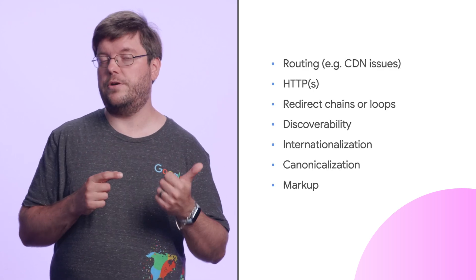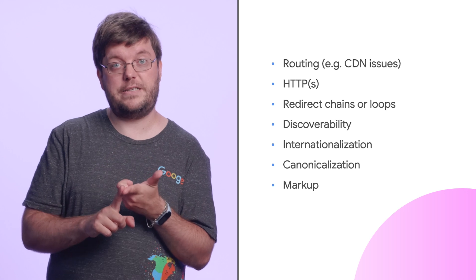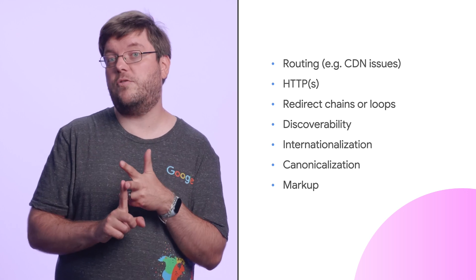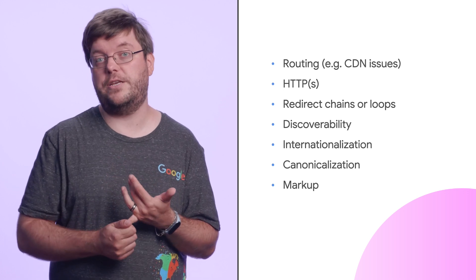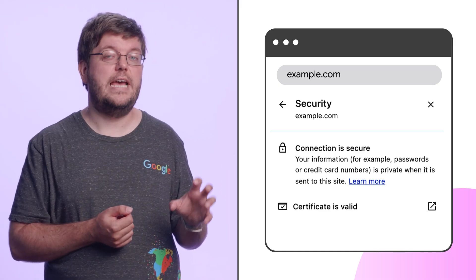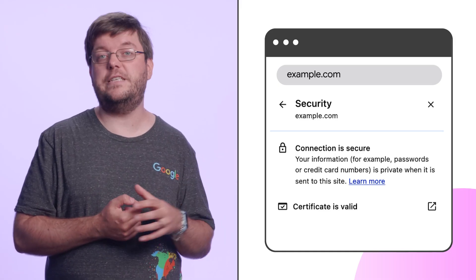A few things to look out for during the audit are routing issues or network issues, HTTP headers and metadata, redirect chains or loops, canonicalization and linking issues, as well as markup and rendering issues. Your choice of tools will definitely help. Crawling tools can identify redirect chains or loops and linking issues quite quickly. HTTP headers and information like HTTP certificates and their validity can be investigated right in your browser.